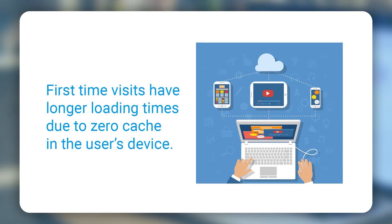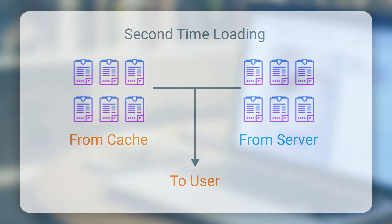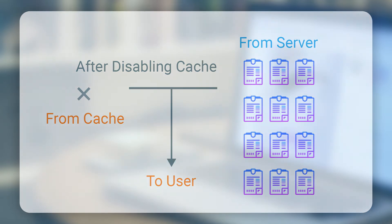That means all the assets need to be downloaded. When a user visits a website the second time, few of these assets are already on the user's computer, due to which only partial loading of assets is needed. To test first-time performance, we need to receive zero assets from the cache, and this is done by checking the box mentioned before.